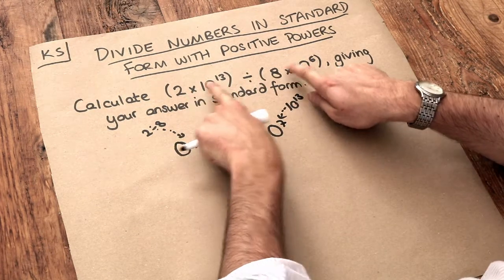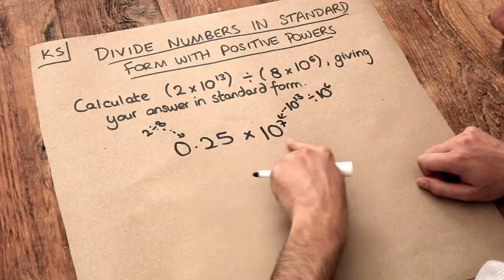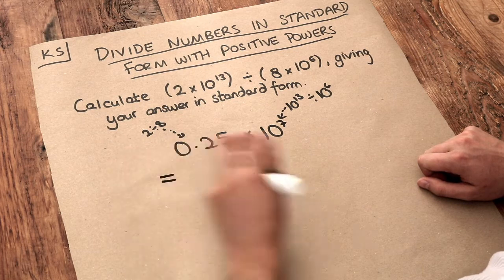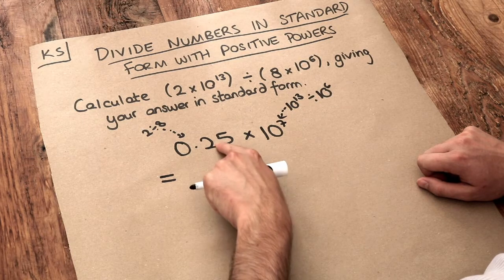So we've divided the numbers on the front and we've divided the powers of 10 and we've ended up with this. However, this is not in standard form. And the reason is that this number here is not between 1 and 10.